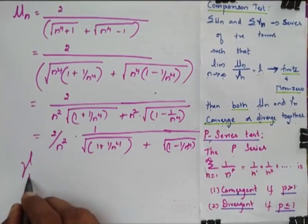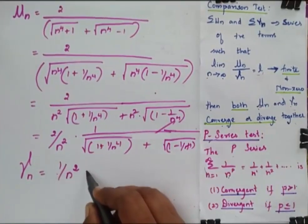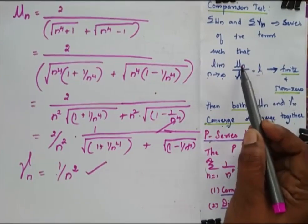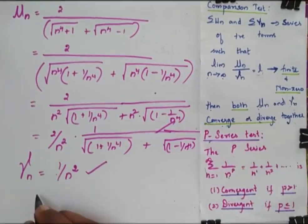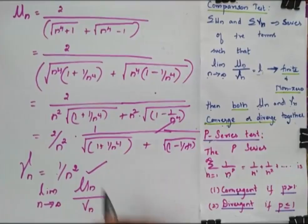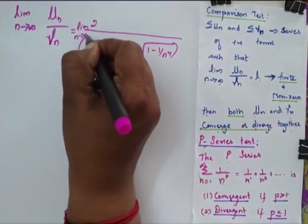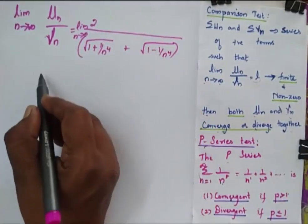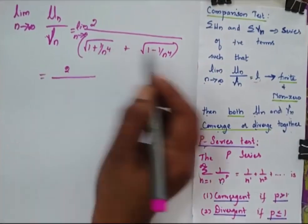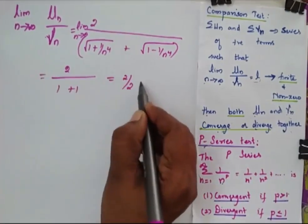I consider vn as 1 by n squared, and I go for the comparison test by finding the limit of n tending to infinity of un by vn. After cancelling n squared, I substitute n tending to infinity. The terms 1 by n power 4 become 0, so the limit equals 2 divided by square root of 1 plus square root of 1, which is 2 by 2, equal to 1.